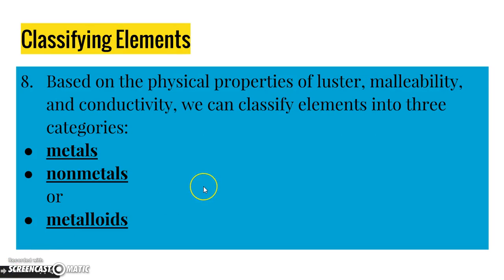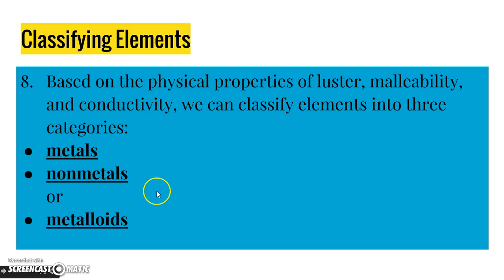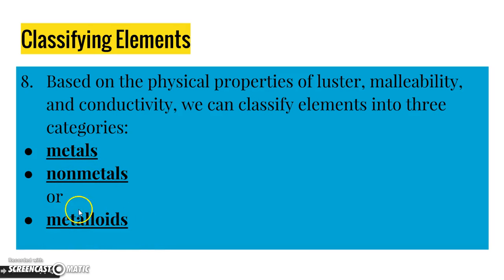Number eight: based on the physical properties of luster, malleability, and conductivity, we classify elements into three categories. So on the periodic table, elements are either metals, non-metals, or metalloids. We're about to talk about the properties of these different kinds of elements.